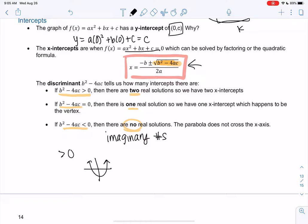When it equals 0, that'll be like just one intercept. It's going to make it touch. It happens to be the vertex as well, because it's the only way to have one. And when it's less than 0, we'll just get a graph that's like shifted and doesn't cross the x-axis. So it's possible to not have x-intercepts.